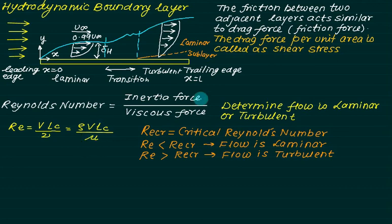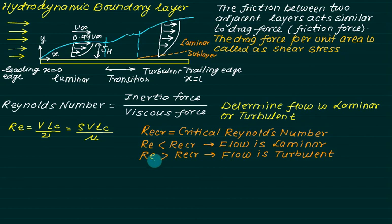To identify whether the flow is laminar or turbulent, we define one number called the critical Reynolds number. If the Reynolds number is less than the critical number, the flow is identified as laminar. If the Reynolds number is greater than the critical Reynolds number, the flow is identified as turbulent.